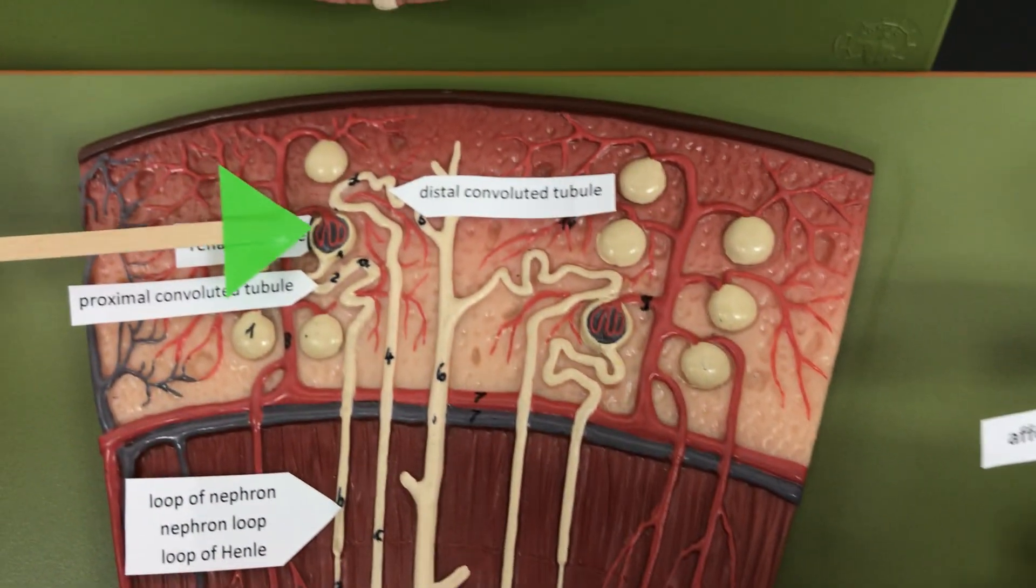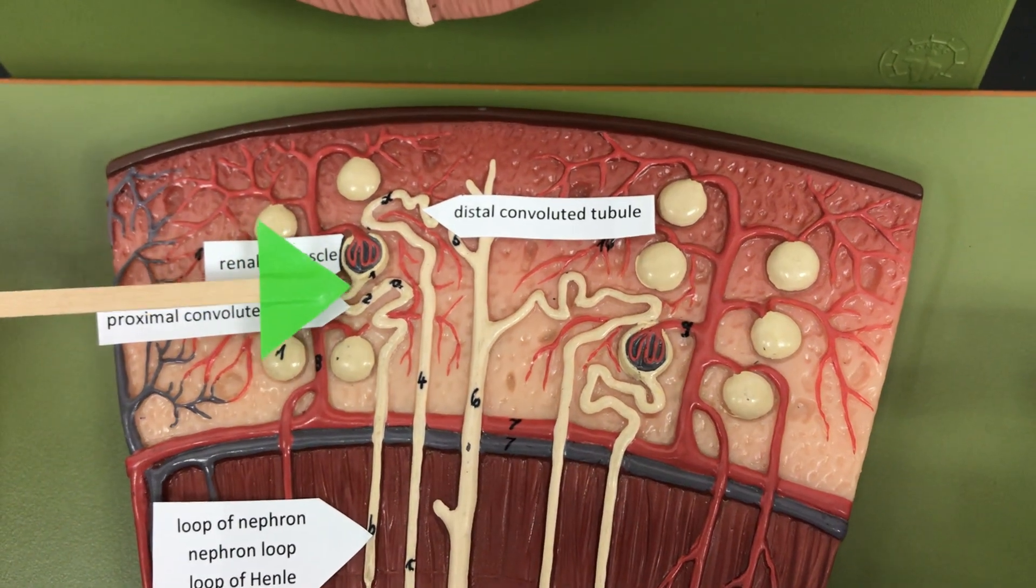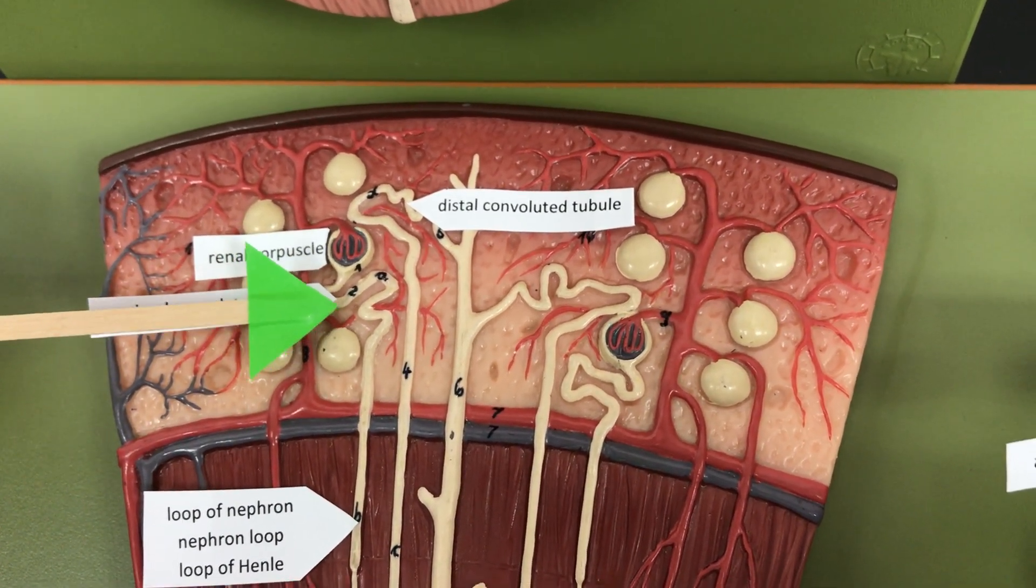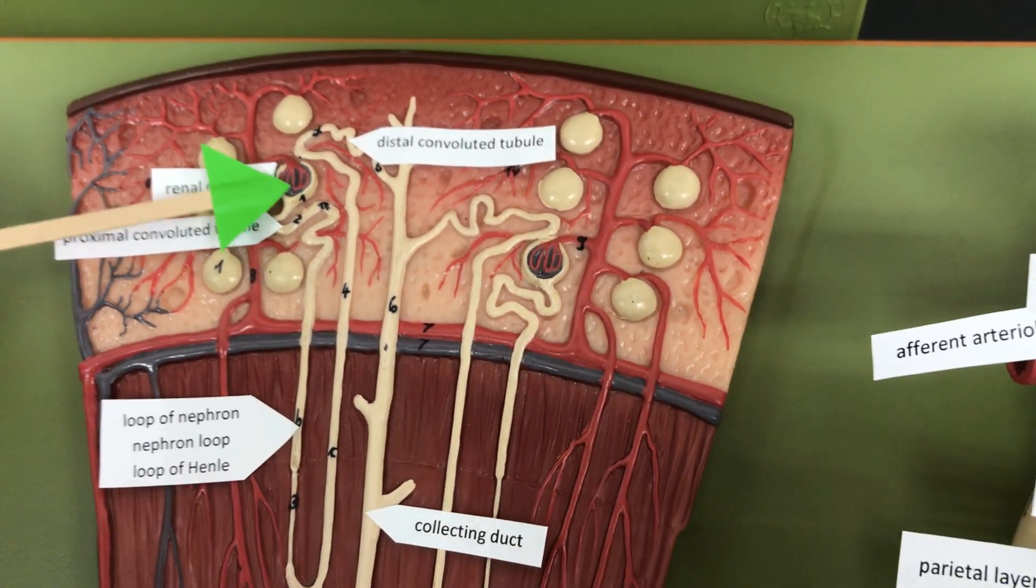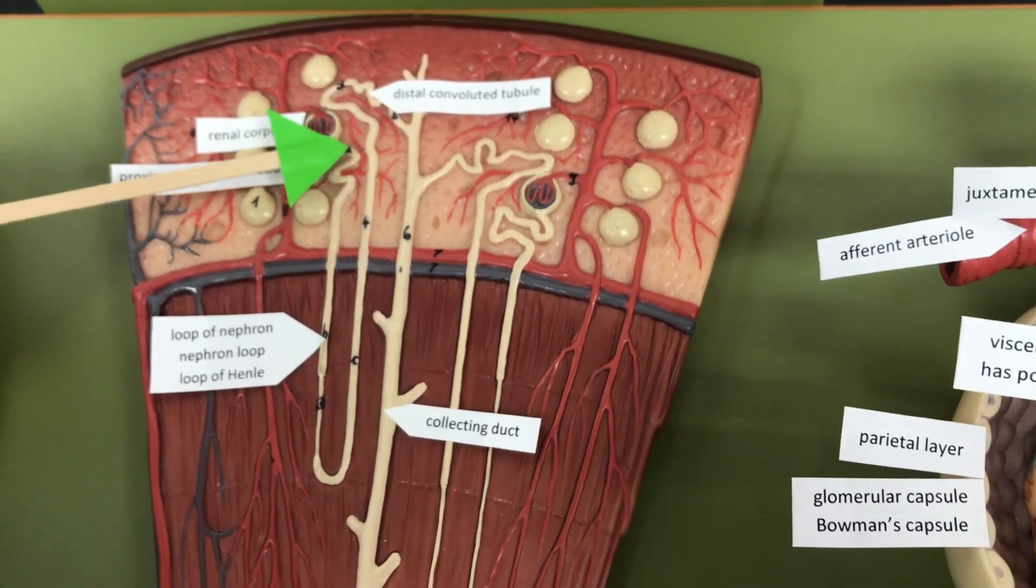So over here we can see here's our renal corpuscle. Here's our proximal convoluted tubule because it's close to the corpuscle and it's curvy.